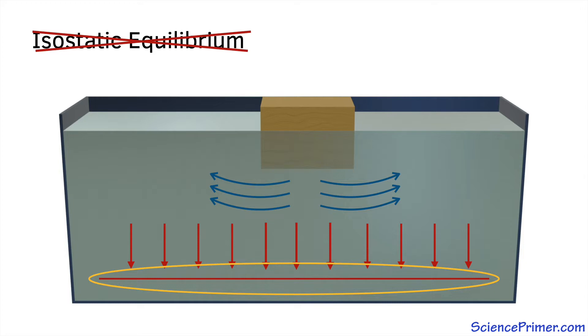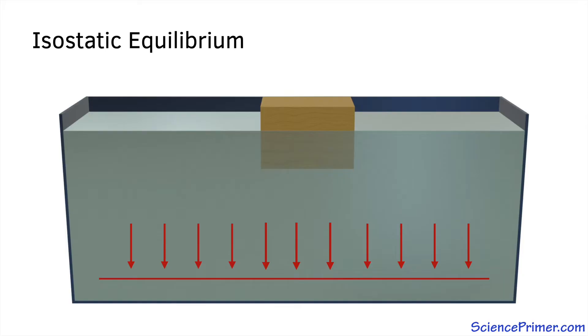When pressure equalizes, water stops flowing, the block stops sinking, and the system is back in isostatic equilibrium.